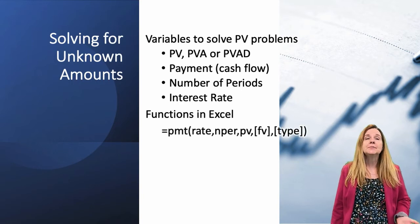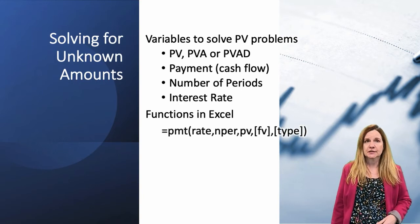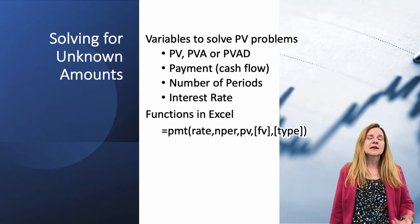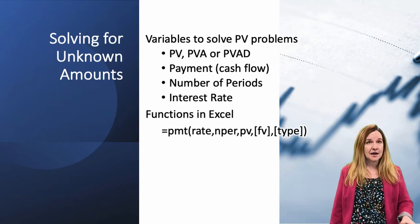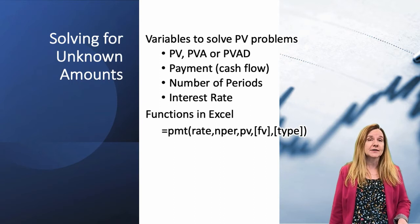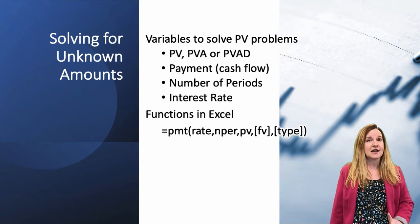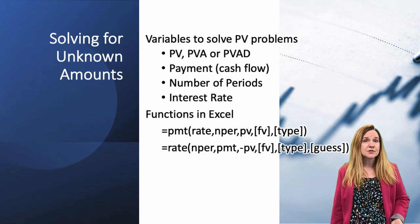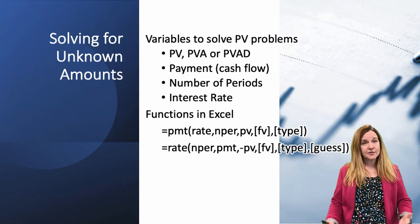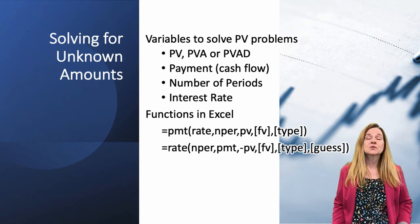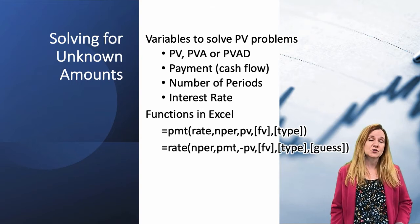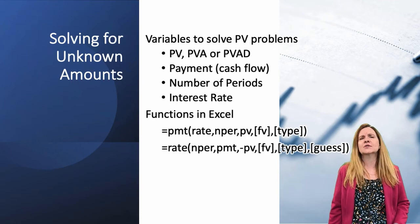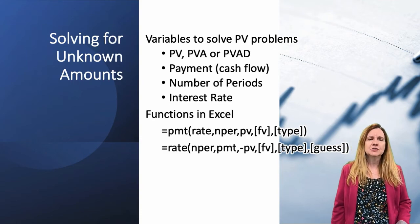The first one is the payment function in Excel — PMT — which solves for payment when we have everything else and just need to find the cash flow. The second one is rate — when we don't know the interest rate but have all the other information. Let's go over to Excel and use those two functions.